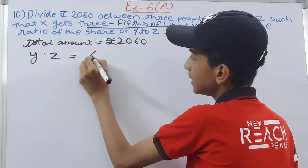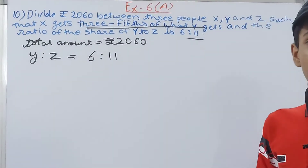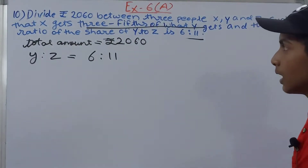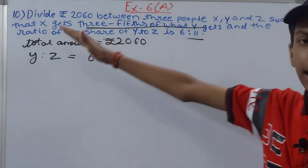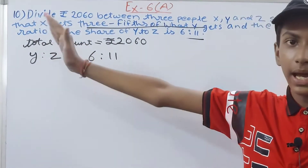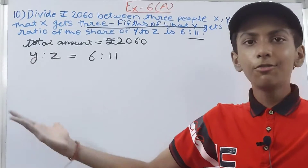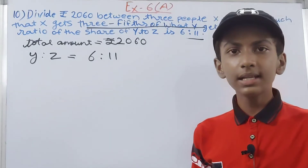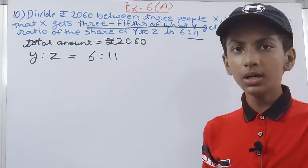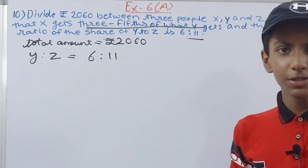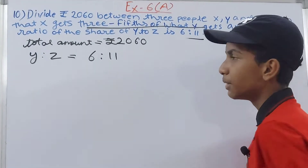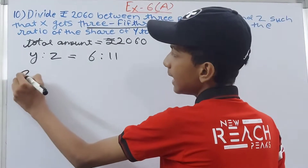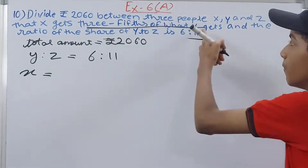We already know that Y is to Z is equal to 6 is to 11. Now we need to add X into this ratio as well — we need to find X is to Y is to Z. Once we have the ratio of all three, we use the formula: first term upon total sum of terms, multiplied by the total money, and similarly for the second and third terms. But we don't know the share of X yet.